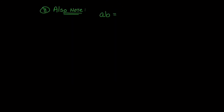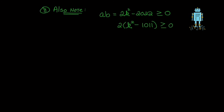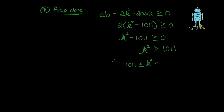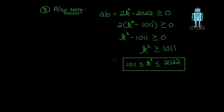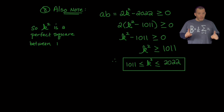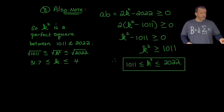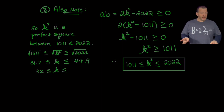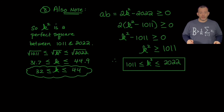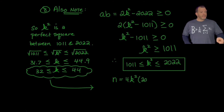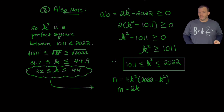It's also worth noting that the product ab = 2k² − 2022 is also greater than or equal to zero. This allows us to put a better lower bound on k², making k² ≥ 1011. Putting these together, we have k² sitting between 1011 and 2022, which puts k as an integer between 32 and 44. This gives us bounds on k and thus a range of values for n using n = 4k²(2022 − k²).